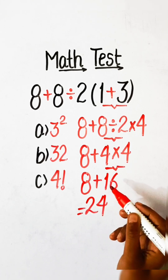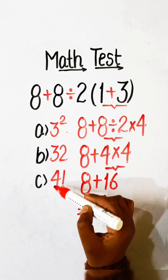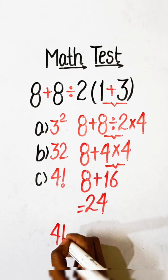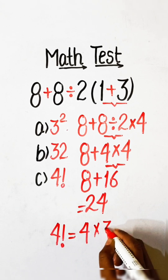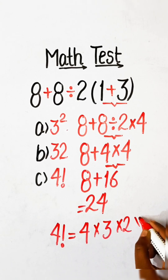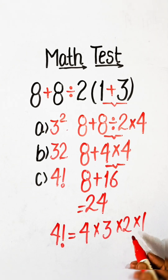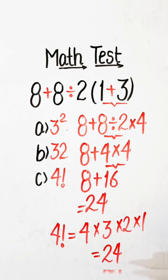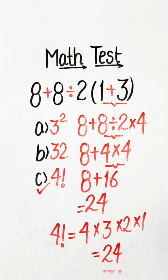In the options we have 3 squared which equals 9, and 32, or 4 factorial. The value of 4 factorial equals 4 multiplied by 3 multiplied by 2 multiplied by 1. 4 threes are 12, 12 twos are 24. So the value of 4 factorial is 24. Our correct option is Option C: 4 factorial.